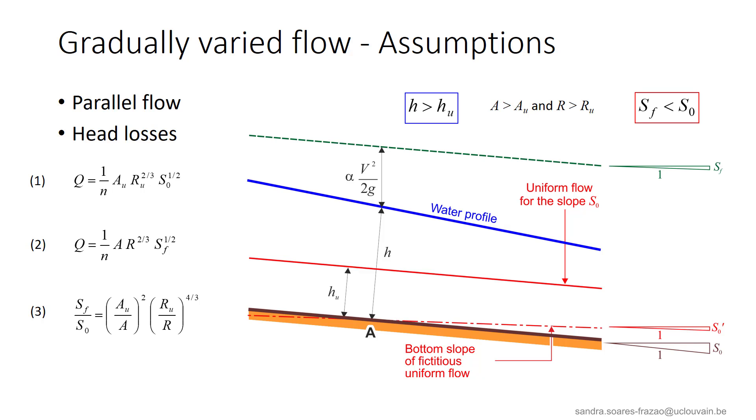Combining equations 1 and 2, we can write the ratio here in equation 3, in which A is larger than AU and R is larger than RU. So as a result, SF is smaller than S0. This means that the fictitious uniform flow with a depth H corresponds to a bed slope S0 prime that is smaller than the actual bed slope S0. So the head losses for the flow with a depth H are smaller than the head losses for a uniform flow with the same depth.